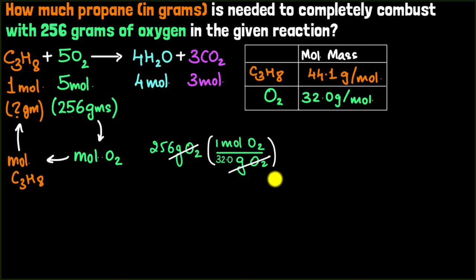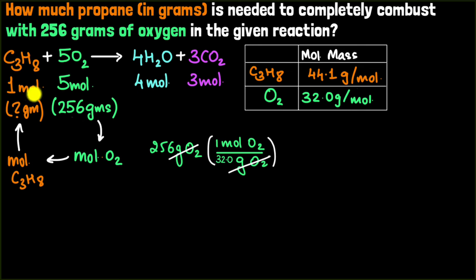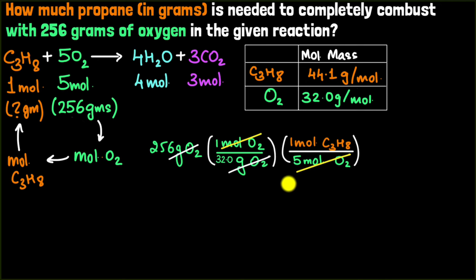We've now found the moles of oxygen. The next step is to convert from moles of oxygen to moles of propane using the mole ratio as a conversion factor. I want moles of propane in the numerator and need to cancel moles of oxygen, so I write it as one mole of propane per five moles of oxygen. The moles of oxygen cancel, leaving moles of propane — the amount needed for complete combustion. The final step is to convert to grams.